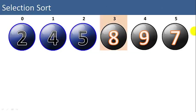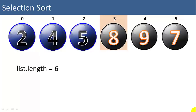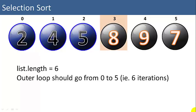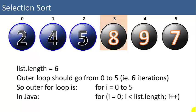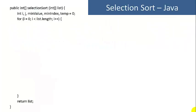How do we know how many times to iterate for the outer loop? The list length is 6 in this example — we have items 0 to 5, a total of 6 items. The outer loop should go from 0 to 5, in other words 6 iterations. In Java code: for(i = 0; i < list.length; i++). That will count 0 to 5. So we'll insert that code here as our outer for loop.